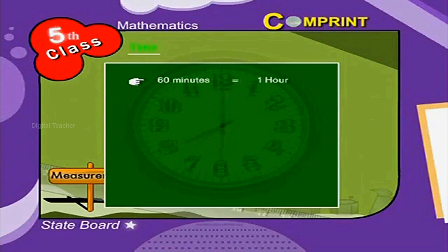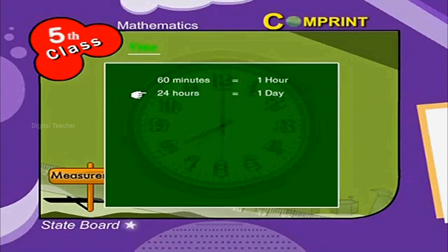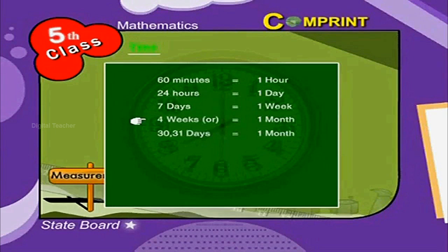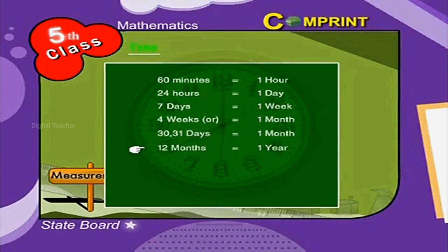Look at the table. 60 minutes is equal to one hour. 24 hours is equal to one day. 7 days is equal to one week. 4 weeks or 30 or 31 days is equal to one month. 12 months is equal to one year, that is 54 weeks.